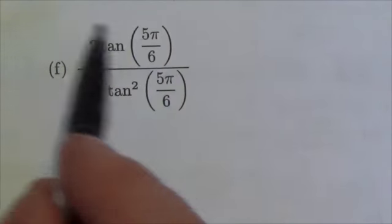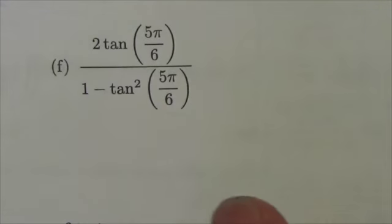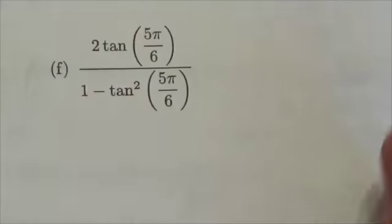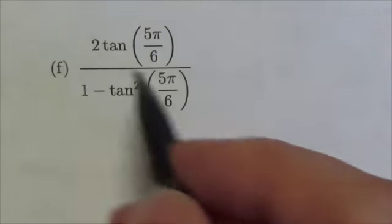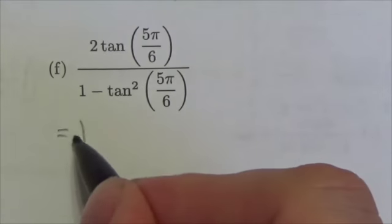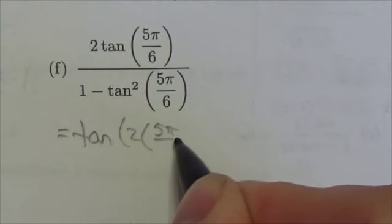This is a double angle tangent identity here. And you just got to get used to it. You would benefit from having that identity sheet next to you while you're doing these things or spend some time going over them so that you recognize these patterns here. This is going to be the same as the tangent of 2 times the angle that we're seeing right there.